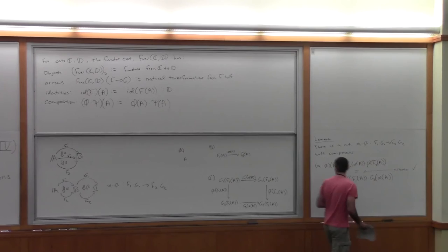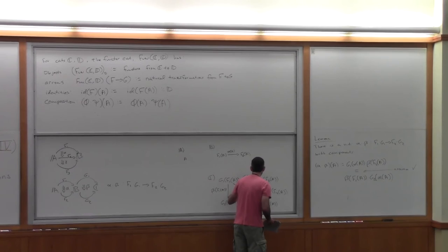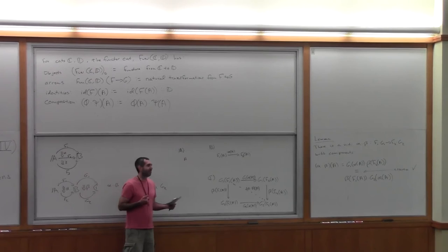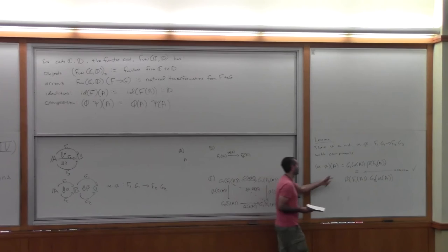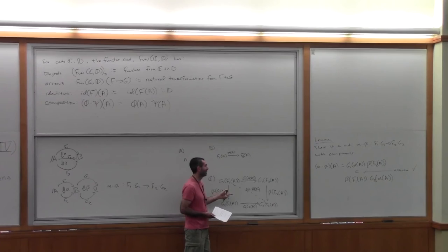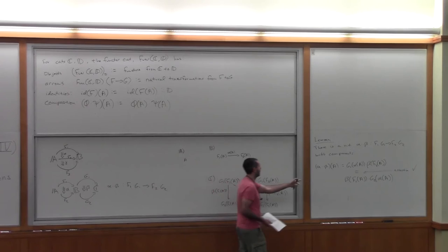What we did was follow our nose: I just used the naturality to get a component, used the naturality to get the square I knew commutes, and then observed that what's on the square is what was written down. Although this seems complicated and unmotivated, it comes from something pretty straightforward. The naturality squares of the horizontally composed natural transformation do commute; read it in the notes.